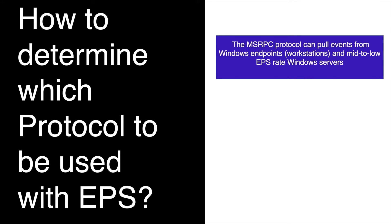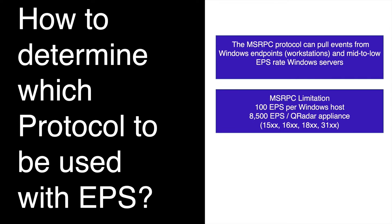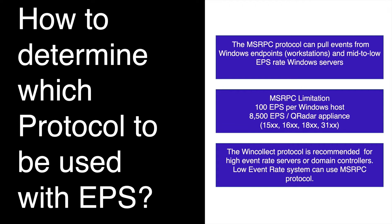Due to its limitation of 100 EPS per Windows host, MSRPC is best suited to pull events from mid to low EPS rate Windows servers. Also, MSRPC has a limitation of 8,500 EPS per QRadar appliance. Compared to this, a WinCollect agent can be used for servers which generate a high number of events, making it a more scalable protocol option.